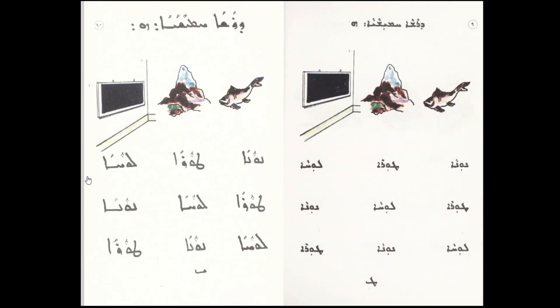Drasha Khmishaya. Right to left: the fish, Nuna; the mountain, Tura; and the chalkboard, Lucha. Next slide. Tura, Lucha, Nuna. Lucha, Nuna, Tura.